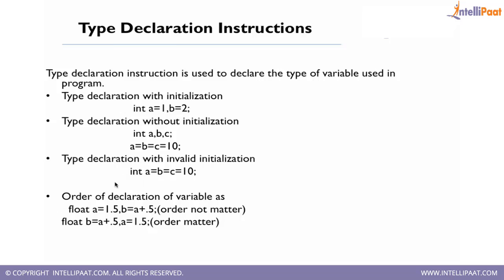Type declaration with invalid initialization: this is treated as invalid because a is declared as int but b and c are not declared, so the compiler doesn't know their types and will give an error. Before doing an initialization we should always do the declaration first. The correct way is to declare variables first and then initialize them after declaration.